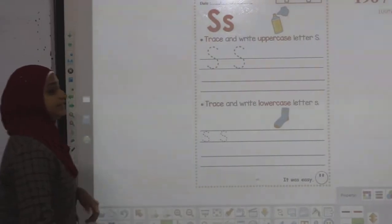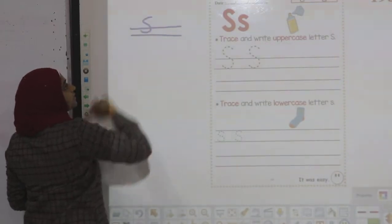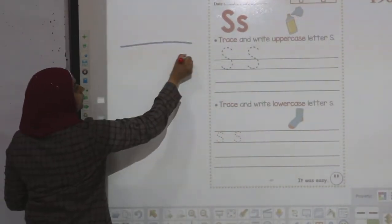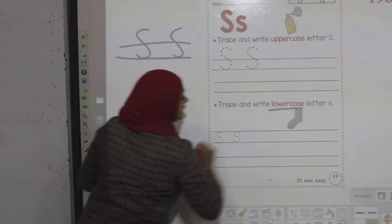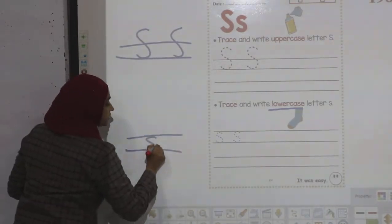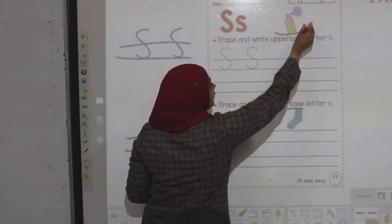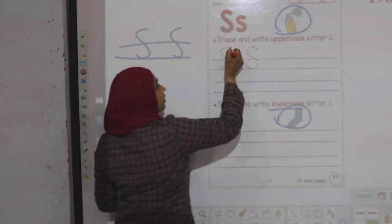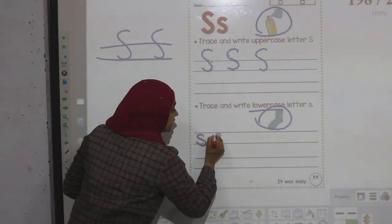The second one is S. How do I write it down? Uppercase S: down snake. Lowercase S: down snake, but written between two lines. S for spray, and S for sock.